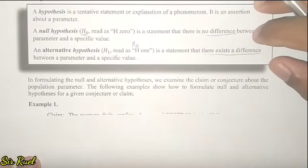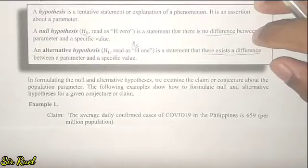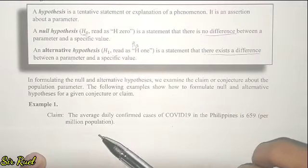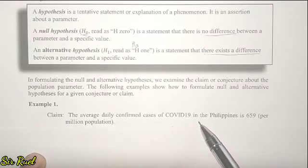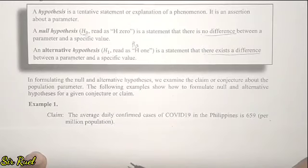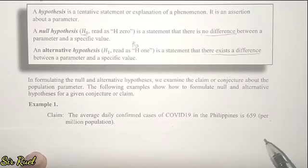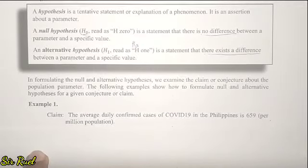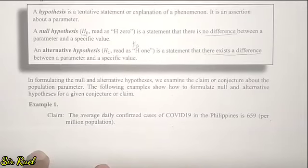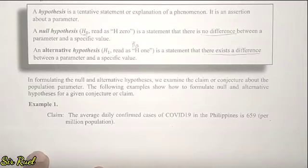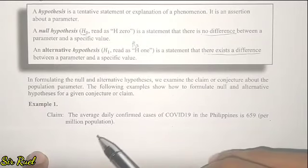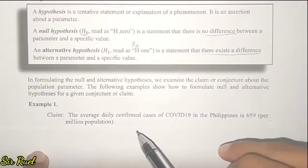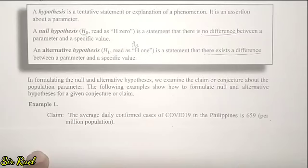Example 1: The claim is that the average daily confirmed cases of COVID-19 in the Philippines is 659 per million population. That is our claim or hypothesis. In hypothesis testing, we need to determine whether this claim is the null hypothesis or the alternative hypothesis.